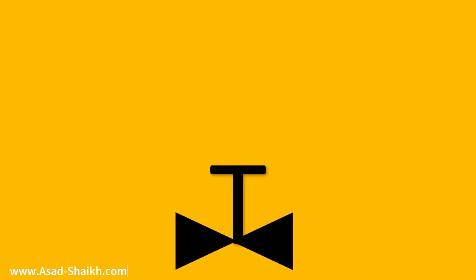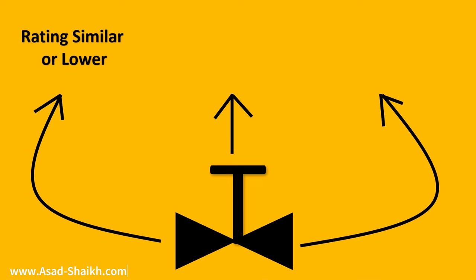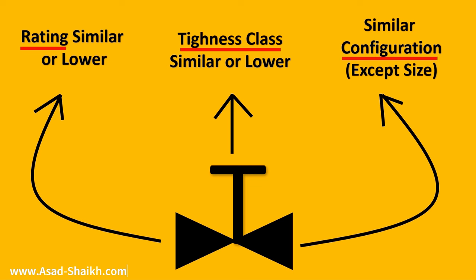Let's summarize type testing. In type testing, if the rating is similar or lower, you can qualify. If the tightness class is similar or lower — generally a similar configuration except the size — then once a particular type is tested, the rest of that type can pass through type testing.